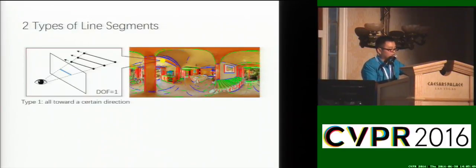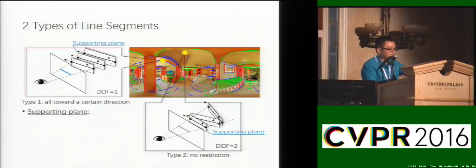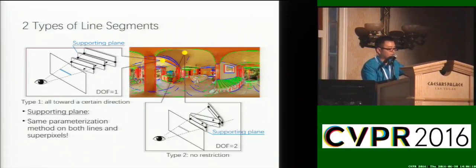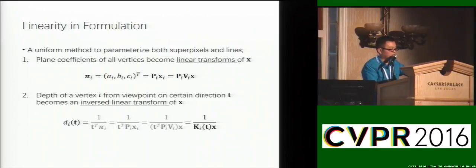As for line segments, we have two types: those with fixed orientations, and those without any restrictions. We introduce the supporting plane to represent a line and treat lines as degenerated forms of superpixels, applying the same parameterization to both lines and superpixels. This uniform parameterization has two advantages: first, the plane coefficients of every vertex become a linear transform of x, where x is the vector of all vertex parameters; second, the depth of a vertex in a certain direction from the viewpoint becomes an inverse linear transform of x.